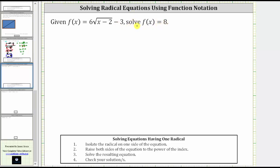Because we are asked to solve f(x) = 8, we substitute 8 for f(x) and solve the resulting radical equation. Performing this substitution gives us the equation 8 = 6√(x - 2) - 3.